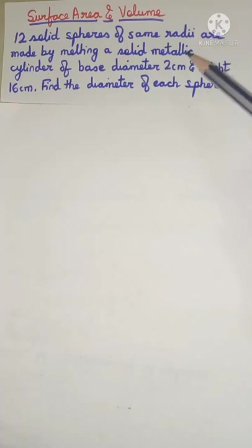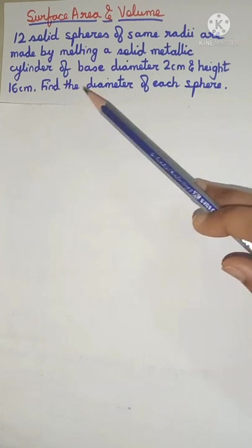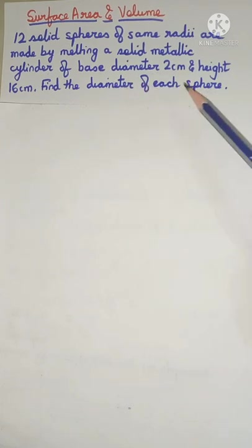12 spheres of the same radii are made by melting a cylinder whose diameter and height are given, and we have to find the diameter of each sphere.